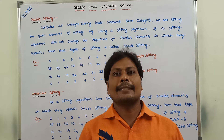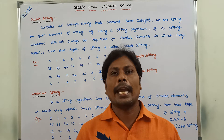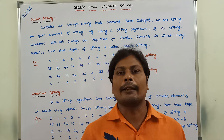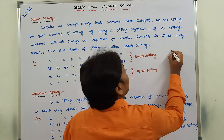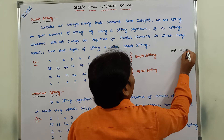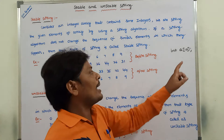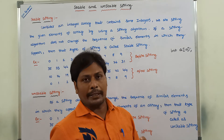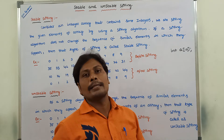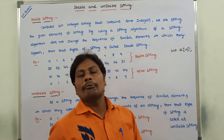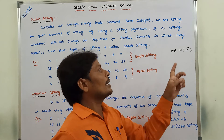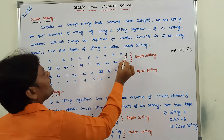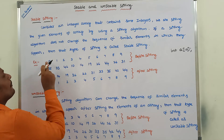Today I am giving a lecture on stable sorting and unstable sorting in data structures and design and analysis of algorithms. Consider an integer array: int a of size 10. The array contains 10 integers that are not sorted, so that type of array is called an unsorted array. We are using one sorting algorithm to sort all the elements of the array.